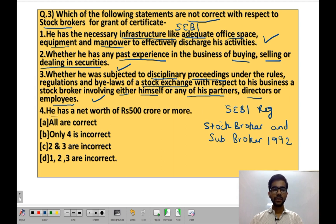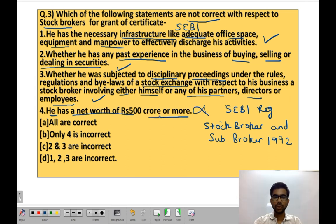Statement 4: the applicant has a net worth of 500 crore or more. This statement is incorrect because no such net worth requirement of 500 crore has been specified. Accordingly, option B is correct — only Statement 4 is incorrect. Moving on to the next question.